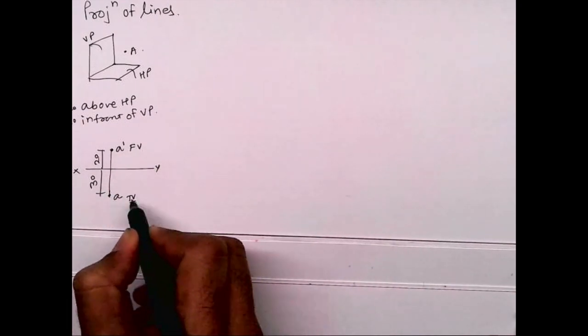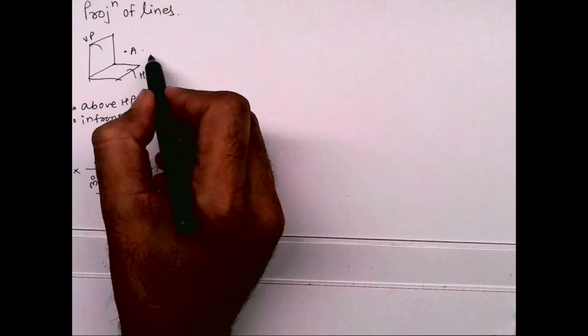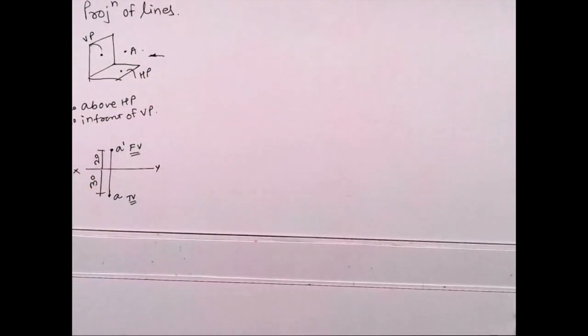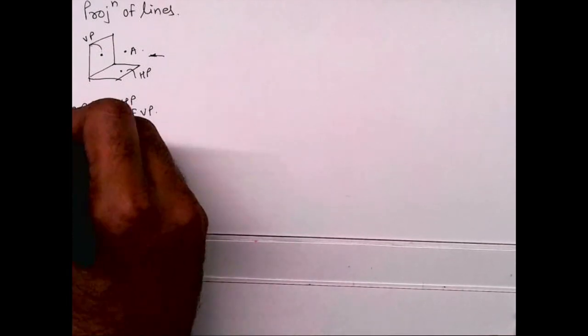So this is front view and top view. This is what we studied in points. When observer will see from here, this is how you will see front view and top view. Now we'll see projection of lines.